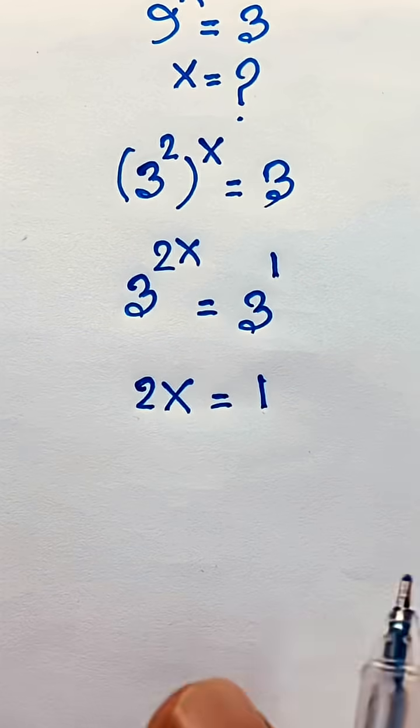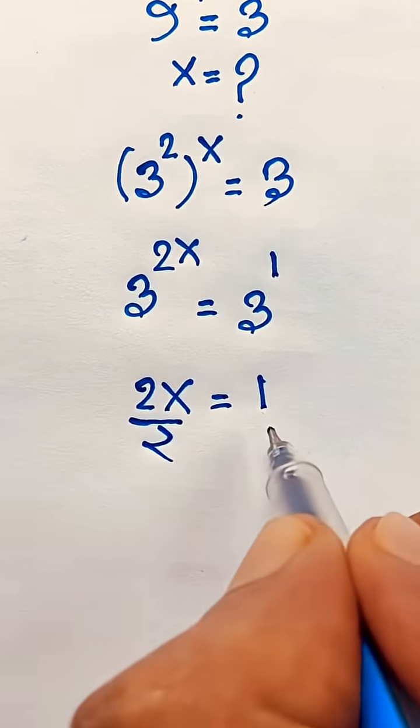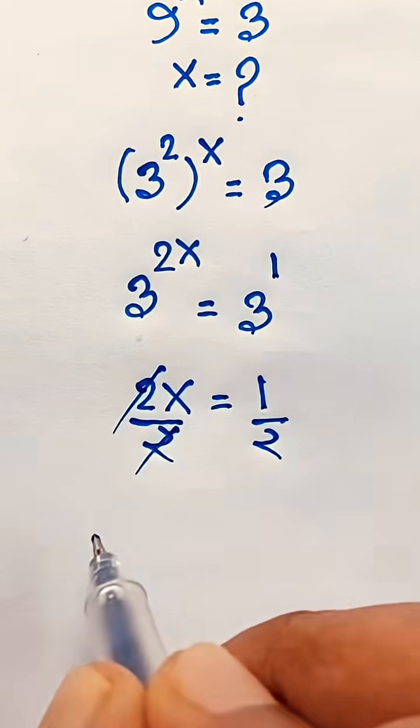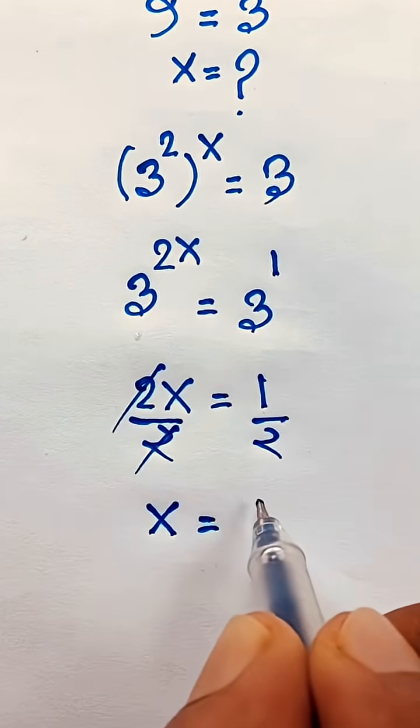Then, if I divide both sides by 2, we will find out this 2, this 2 cancel out, here x is equal to 1 over 2.